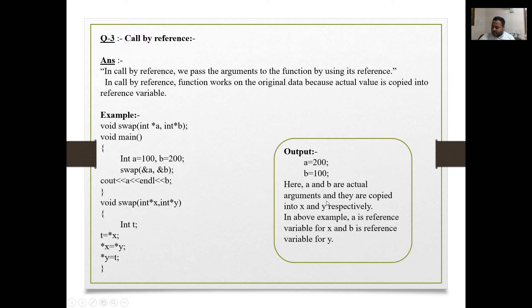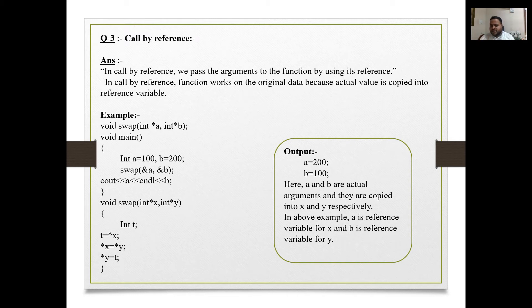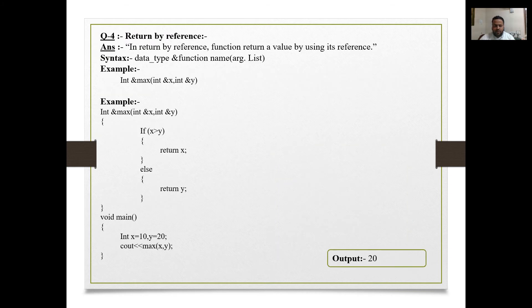Here a and b are the actual arguments, copied into x and y respectively because we are using '&'. For address we use pointers. In the above example, a is a reference variable for x and b is a reference variable for y. You can always use the debugger in Code::Blocks or press F7 in Turbo C++ to execute the program line by line.